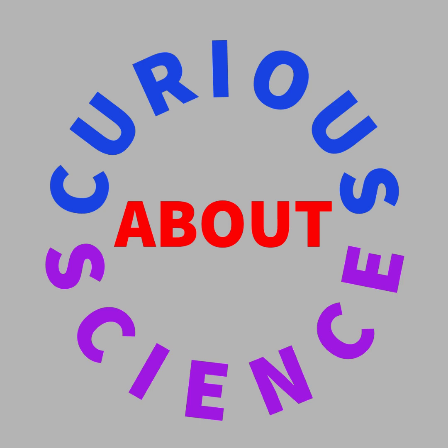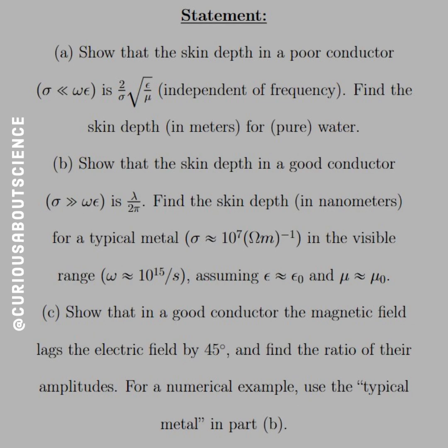All right, so last question, we had fun with these approximation schemes dealing with the k and kappa from the complex wave numbers. Let's go ahead and dive a little more into this and take another stab at a question. Our statement here reads, part A, show that the skin depth in a poor conductor,